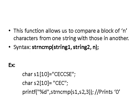Another variation is strncmp(), which compares a block of n characters from one string to another. The syntax is strncmp(string1, string2, n). For example, with s1 as 'cec cse' and s2 as 'cec', strncmp(s1, s2, 3) compares the first 3 characters of s1 and s2. Since they match, it returns 0.